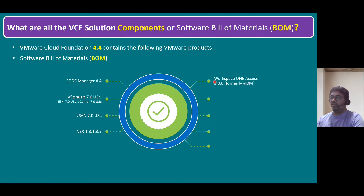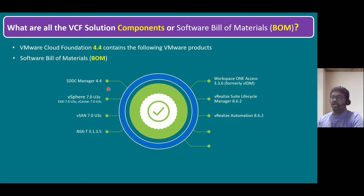vRealize Suite comes with five components. Workspace ONE Access 3.3.6 version minimally — formerly this was VMware Identity Manager (IDM), and the new name is Workspace ONE Access. And vRealize Suite Lifecycle Manager, currently at version 8.6.2. And vRealize Automation 8.6.2. As we are aware, vRealize's name also recently changed to ARIA Automation and ARIA Suite. Maybe once the products are publicly available we can plan to use ARIA. Until then, I'm using the product names as listed in the official documentation. And vRealize Operations 8.6.2. And another component is vRealize LogInsight 8.6.2.